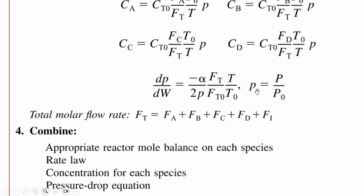Then using the pressure drop expression dP/dW = -α/(2P)·(FT/FT0)·(T/T0), while P is the pressure ratio, and total flow rate is FA, B, C, D, and if there are any inerts present in the system then we will add it as well.